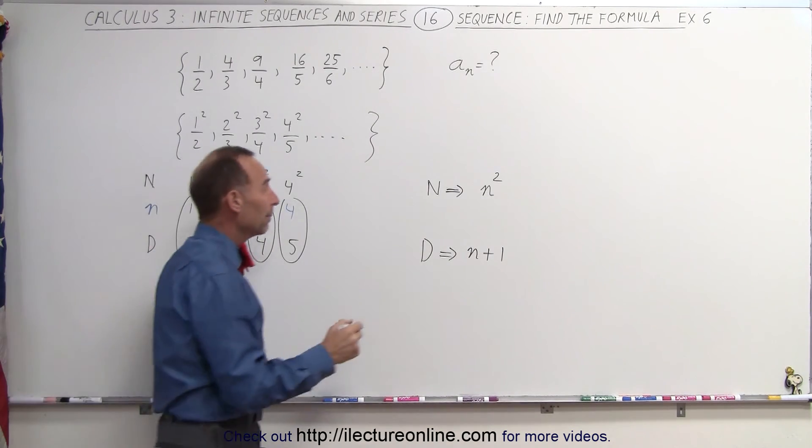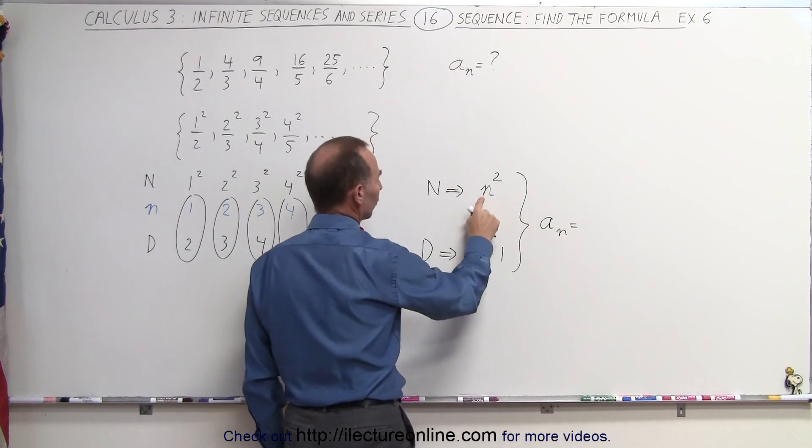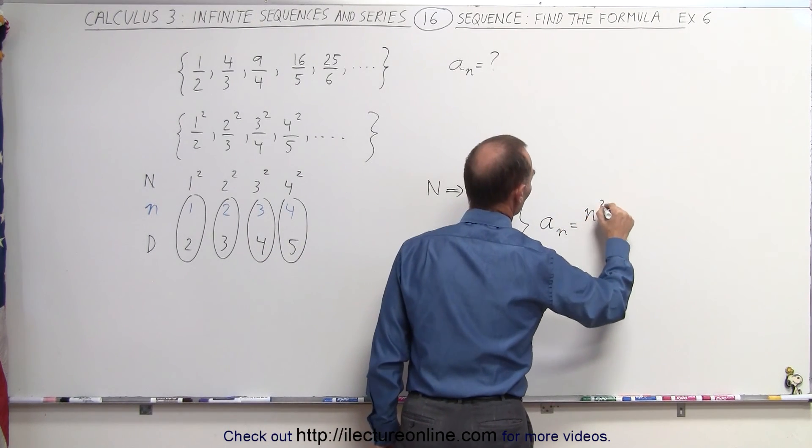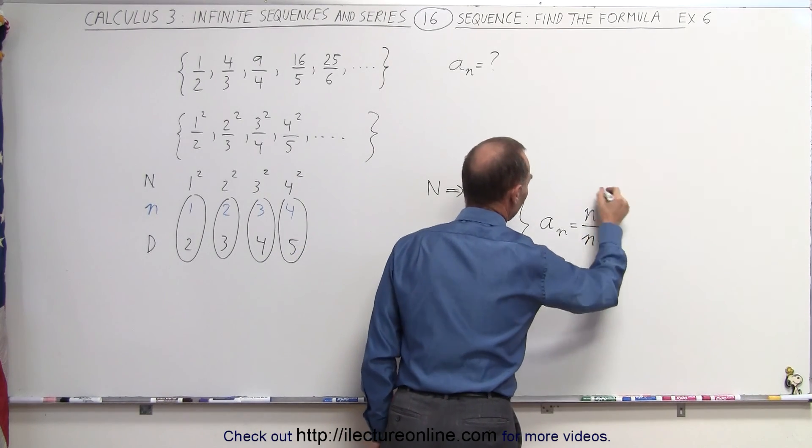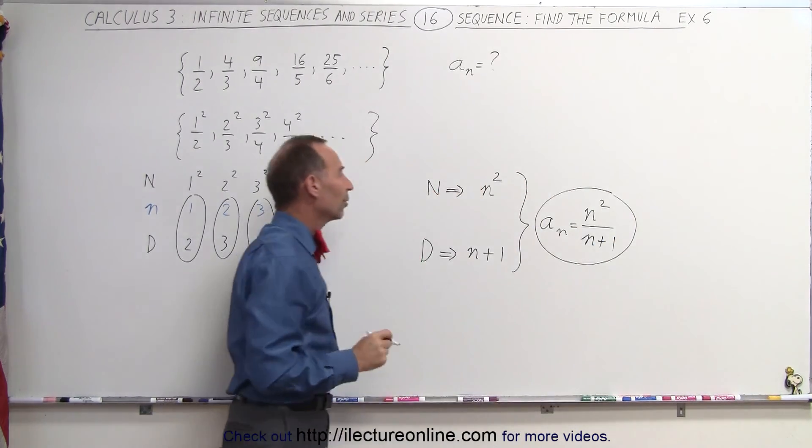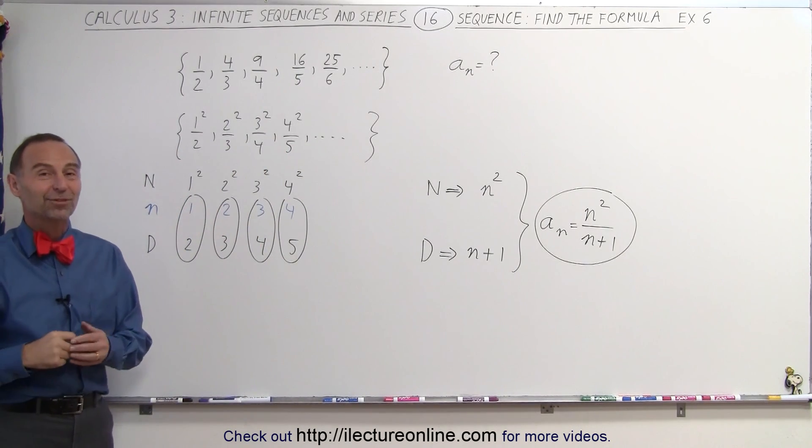And so that means when we combine the two, we can then say that a sub n can be written as the numerator becomes n squared, and the denominator becomes n plus 1. And that would be a good way to write the general equation for that particular sequence. That's how it's done.